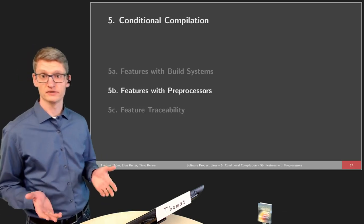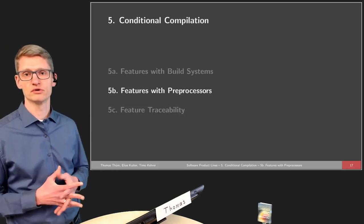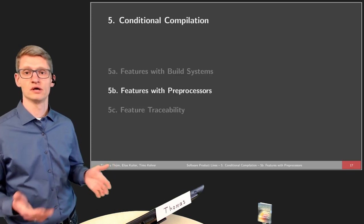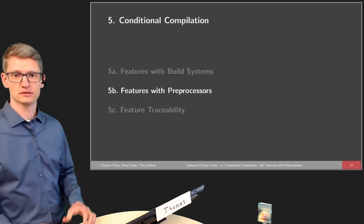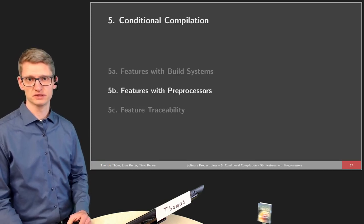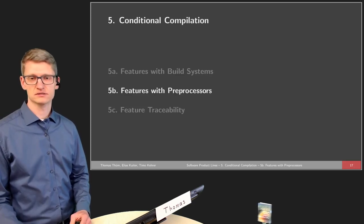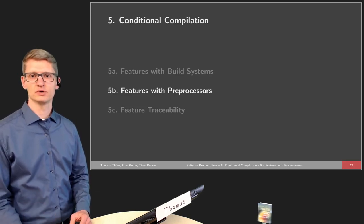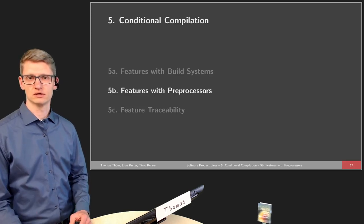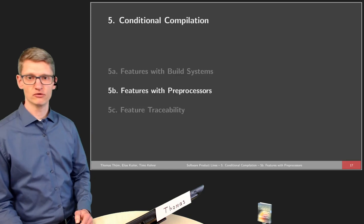Welcome to the second part of the lecture on Conditional Compilation. We want to look at how we can realize the vision of compile-time features in a more fine-grained manner, as we've seen with Build Systems. We looked at compile-time variability customized based on feature selection, which is close to our vision, but not the right granularity — that's why we introduce preprocessors here as a more fine-grained technique.